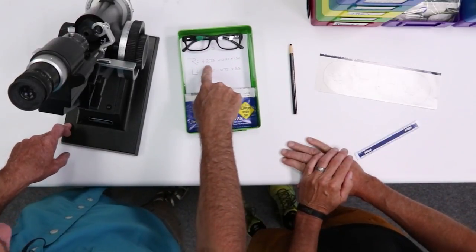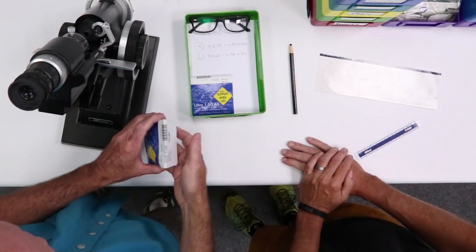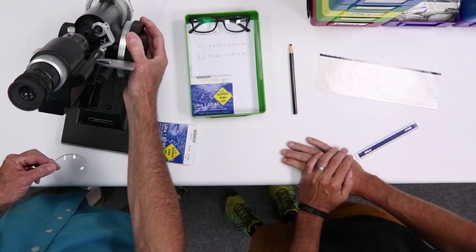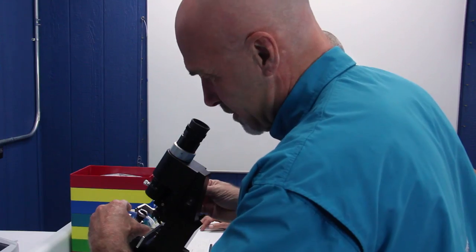All right, these are your glasses. We've got a right, plus 275, minus 50 at 130. I'll get this set up, and then I'll hand it off to you. Okay. Set my lens meter to plus 275. That looks good.